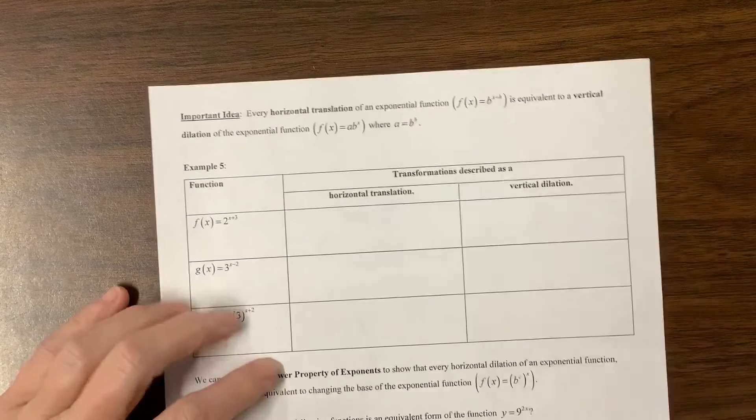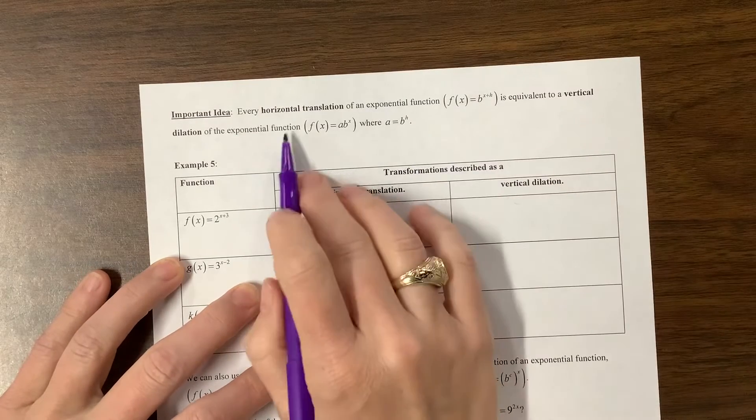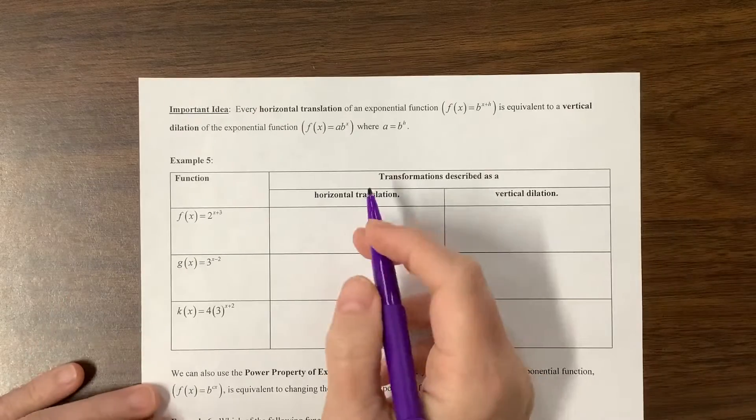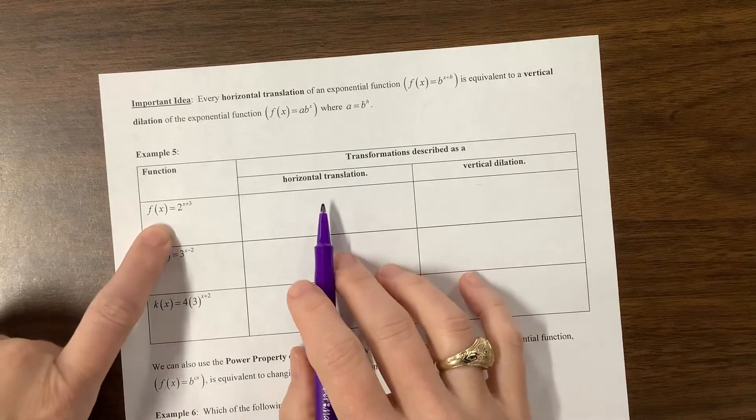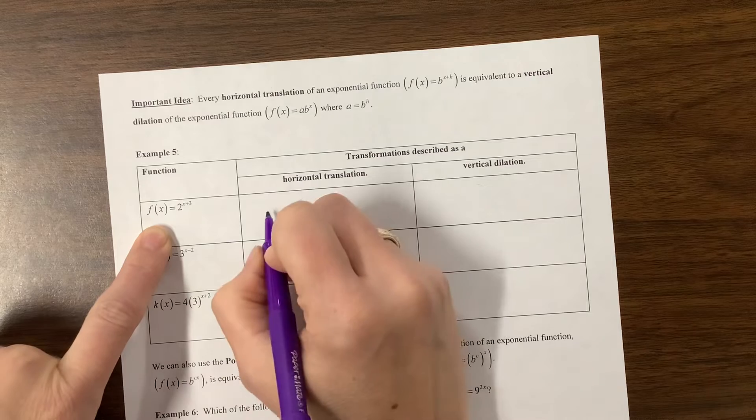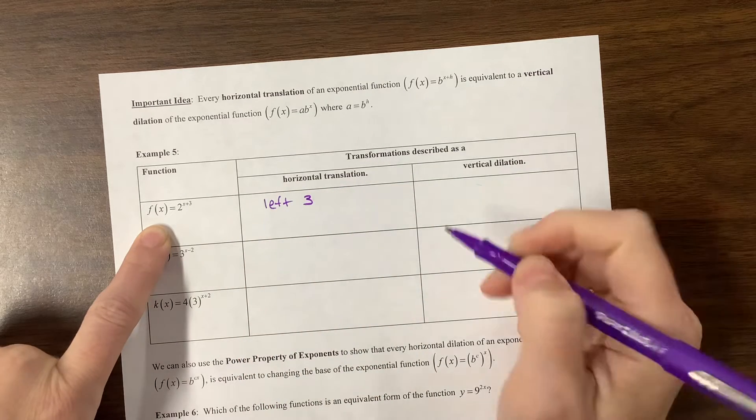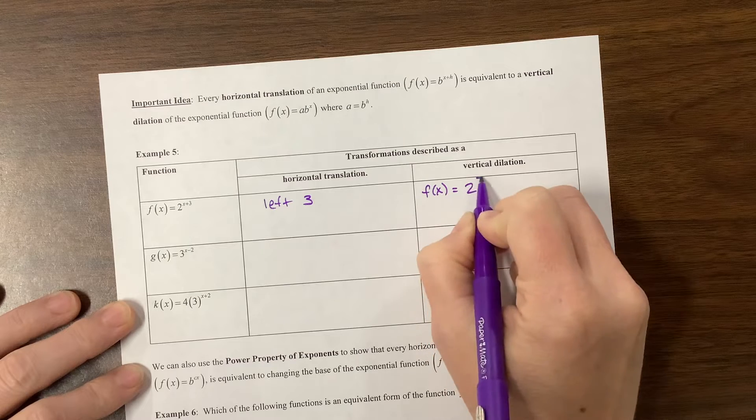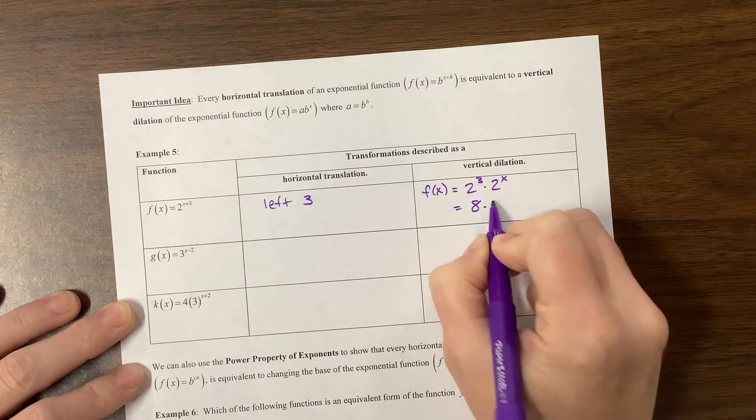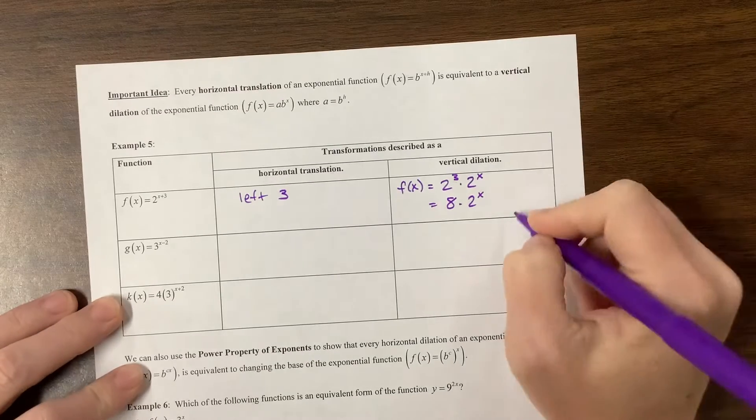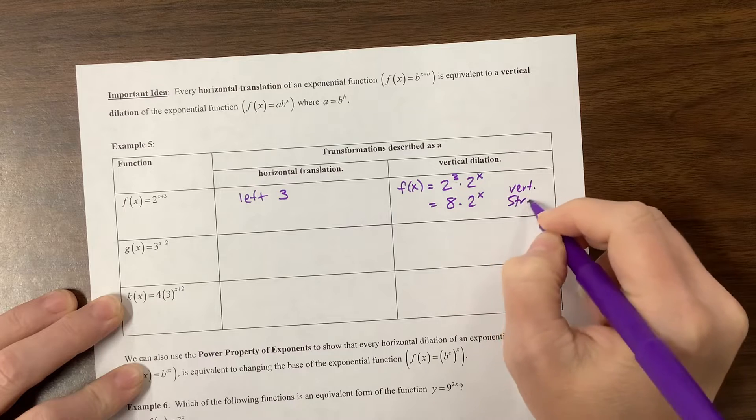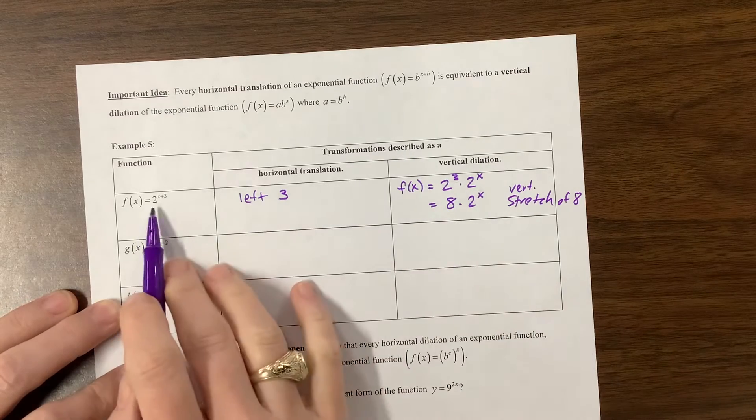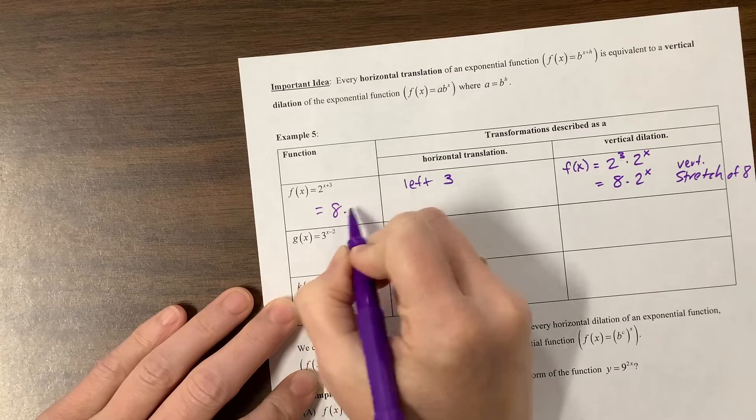So what we're going to point out here is that we can see a horizontal translation can be equivalent to a vertical dilation. And I've seen this sort of idea show up in IB also, so that's kind of fun. Okay, so the horizontal translation, what did this do? This took our graph and it moved us left three units. So what is its vertical dilation? Well, we can rewrite this as f(x) is equal to 2^3 times 2^x, which is 8 times 2^x. So the vertical dilation is a vertical stretch by a factor of 8, which is kind of cool. This is equivalent to 8 times 2^x.